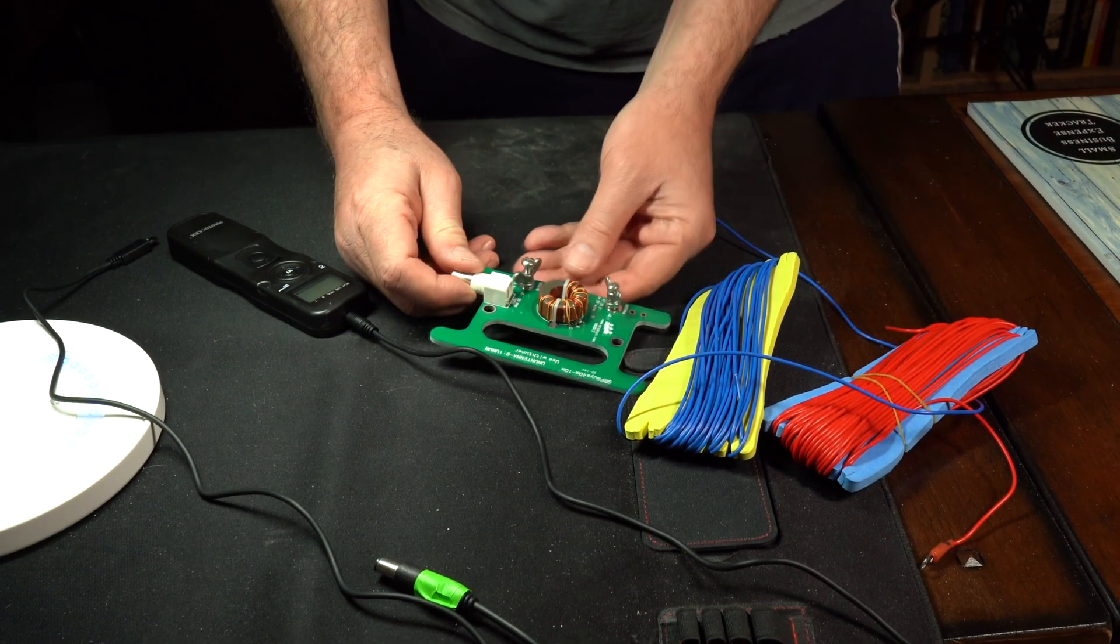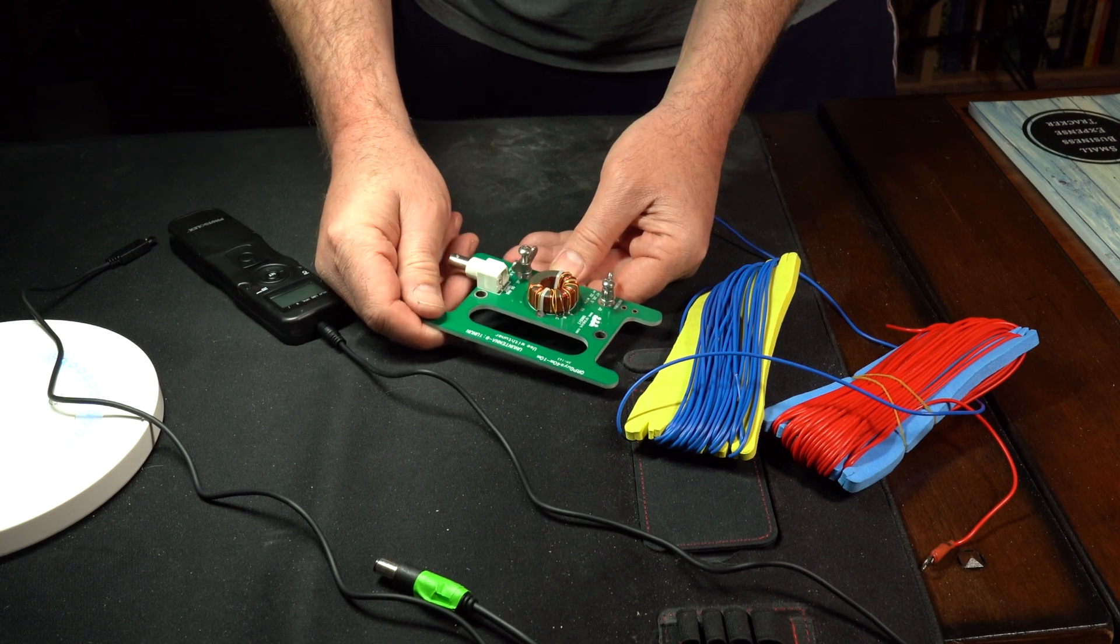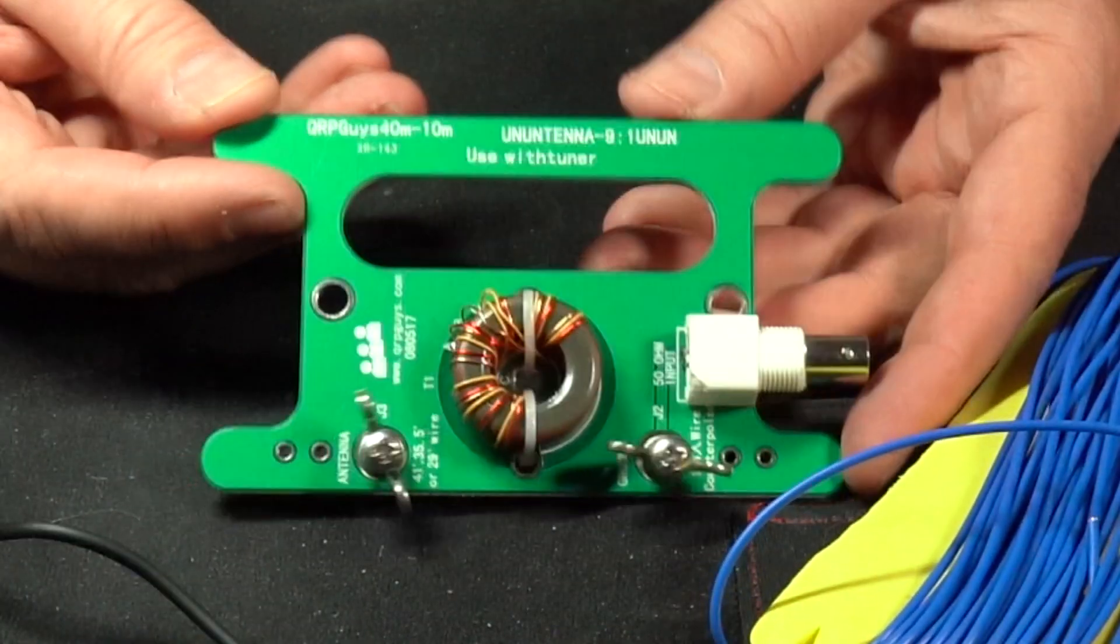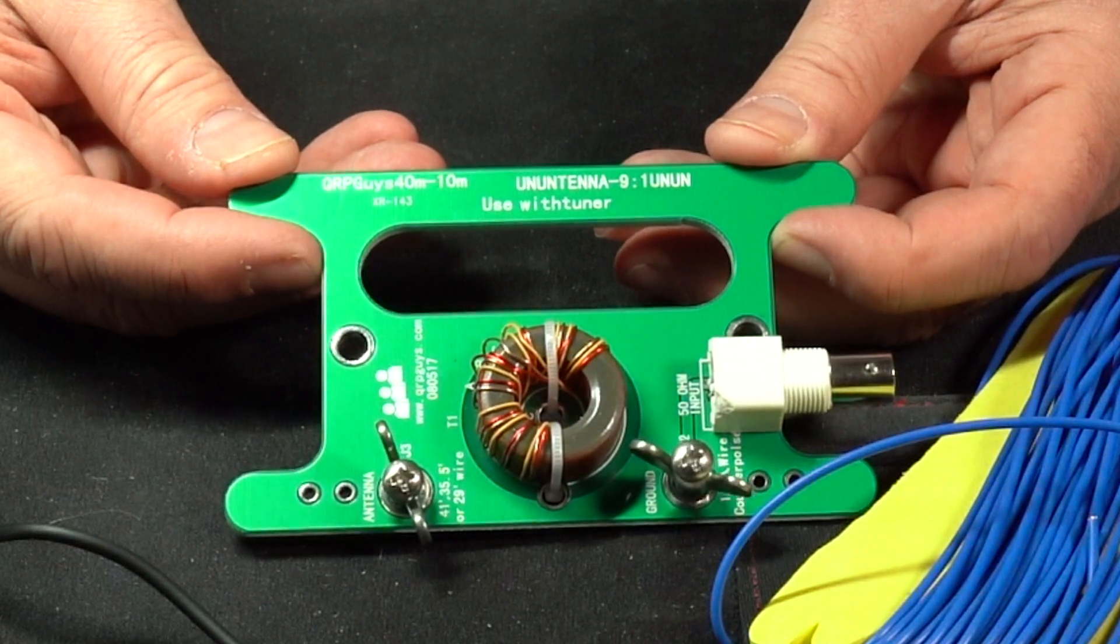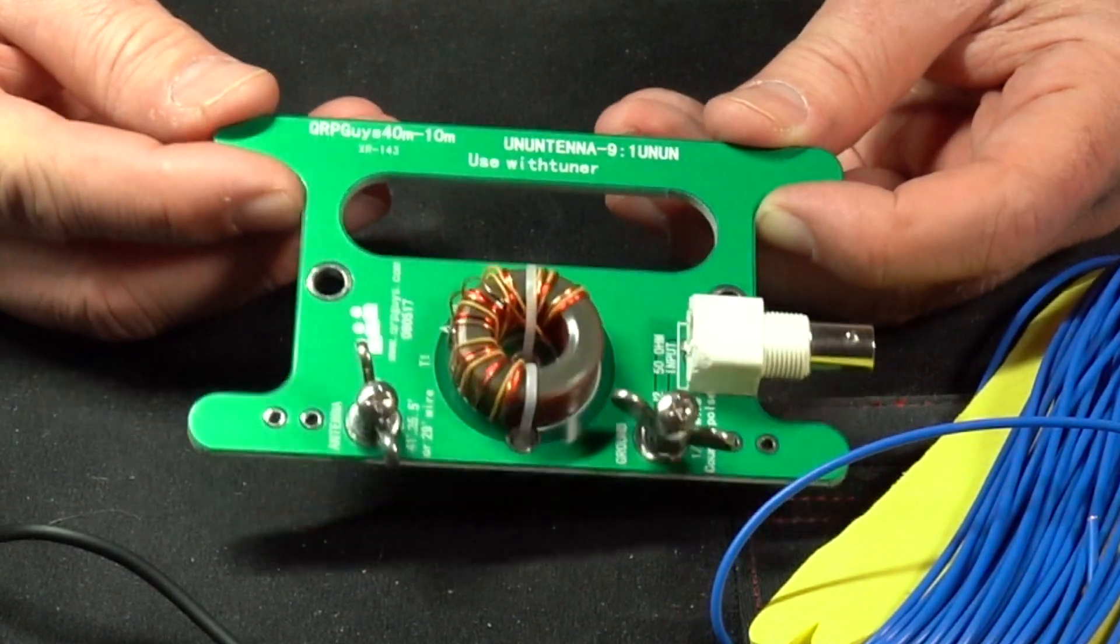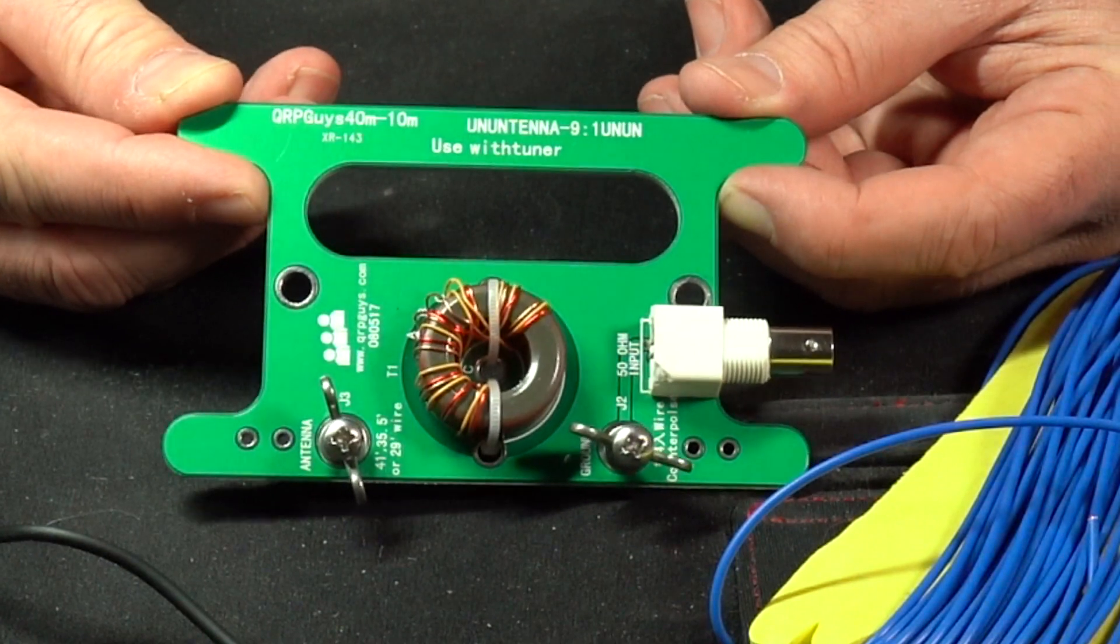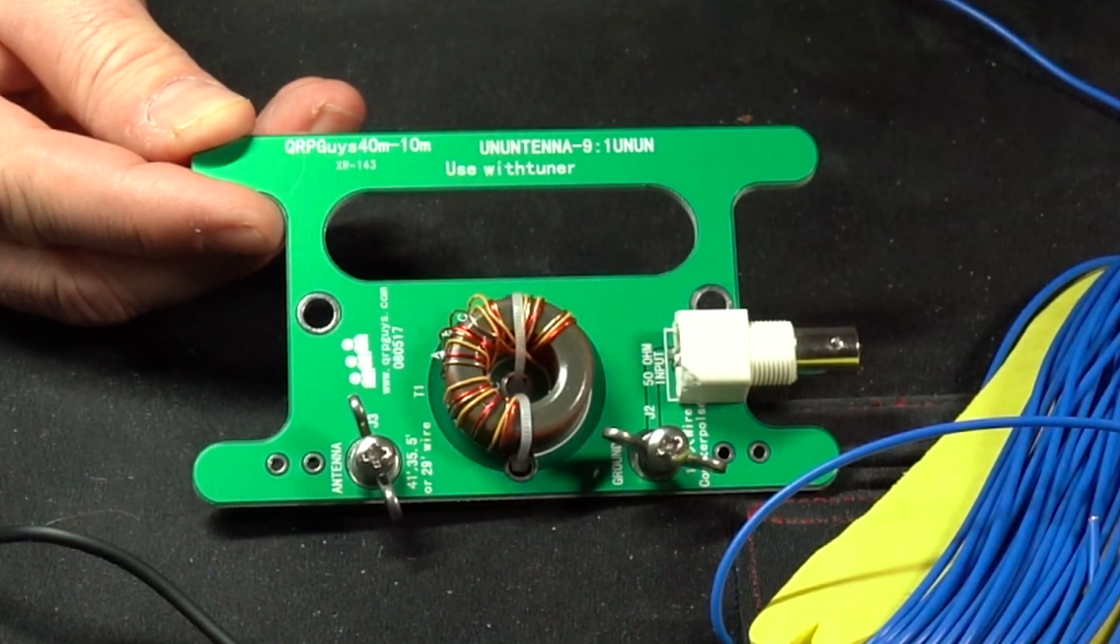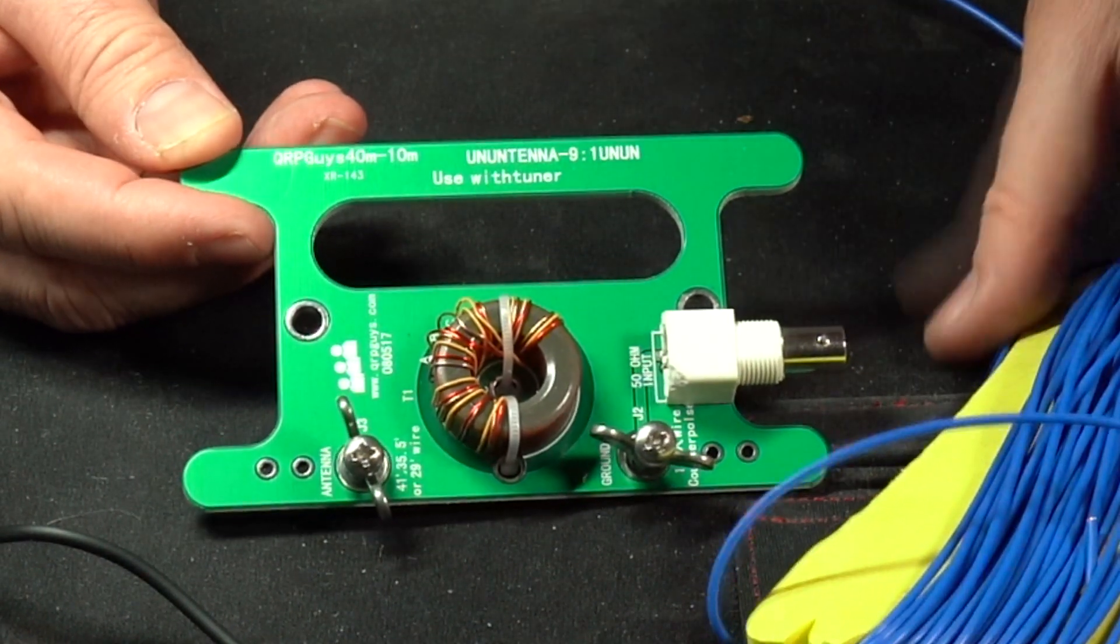Okay guys, we're going to talk about the 9 to 1 UNUN QRP 10 to 40 meter antenna - the cheapest antenna I think you can get on Amazon. Twenty dollars, link is in the description. It's two wires.